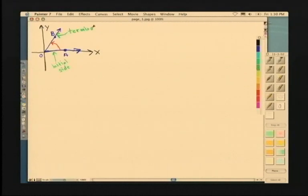If an angle has its initial side on the positive half of the x-axis and its vertex at the origin, we say that that angle is in standard position.